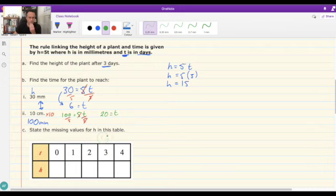State the missing values for h in this table. Where time was 3, we already had that up here, so where time was 3, h was 15. We can just substitute these in now into our original equation. h is equal to 5 times whatever t is equal to. So 5 times 0 is still 0. 5 times 1 is 5. 5 times 2 is 10. We can see the pattern here. 0, 5, 10, 15, and 4 t's is 20.